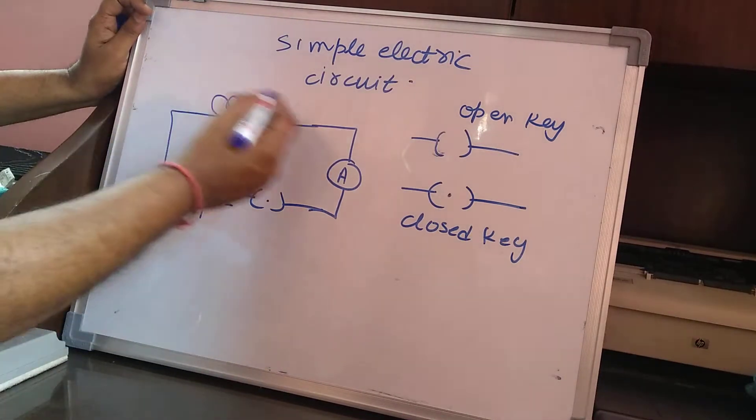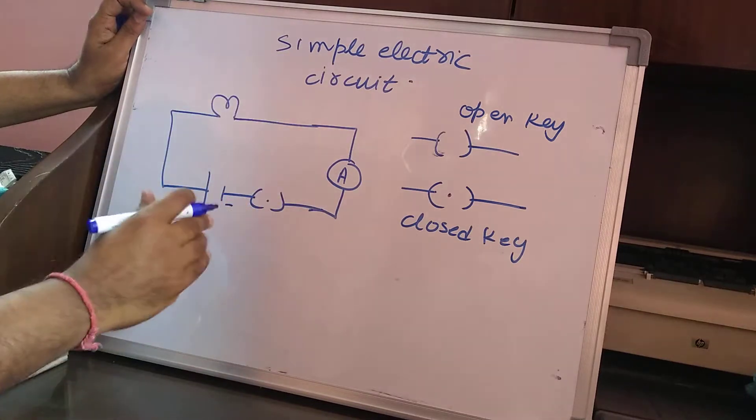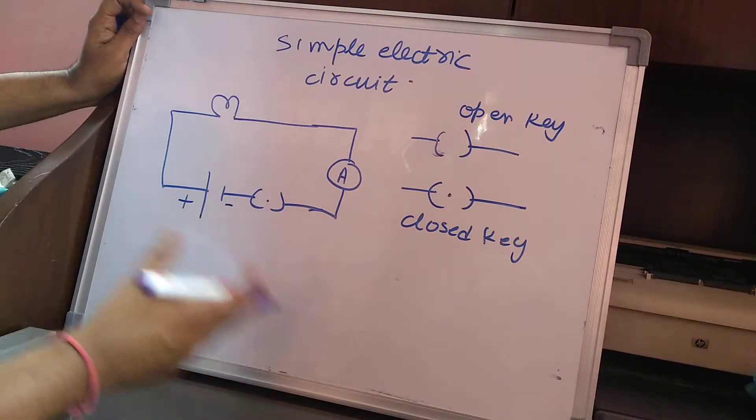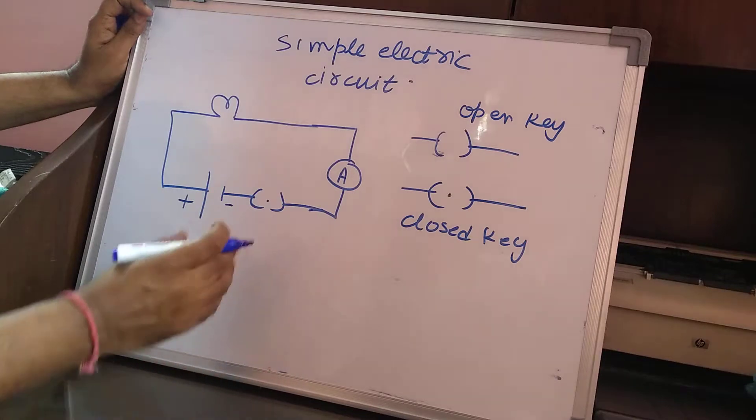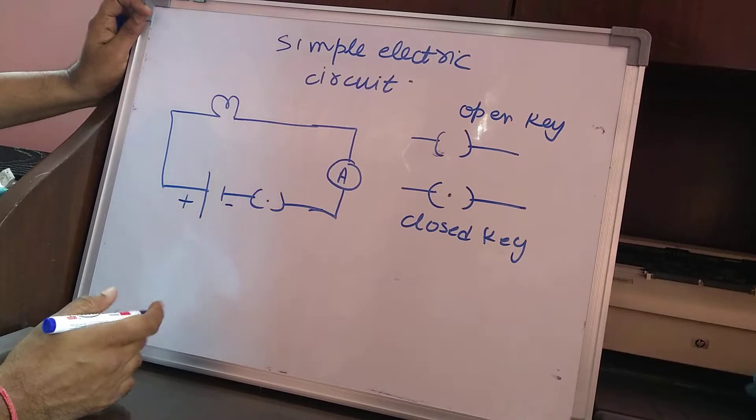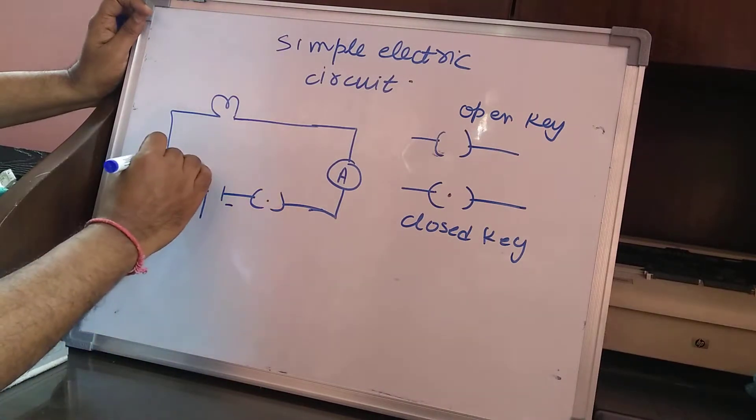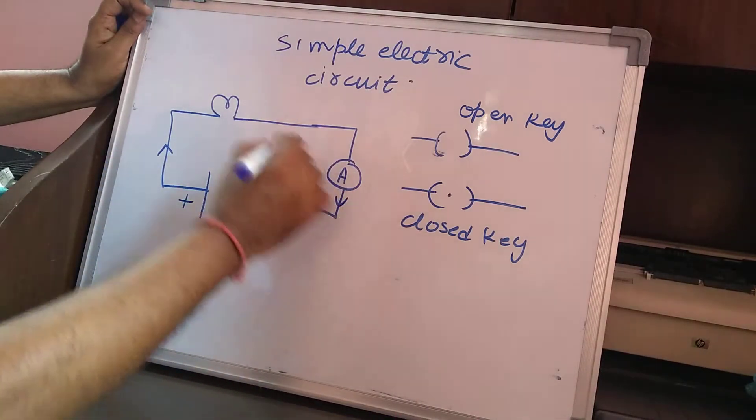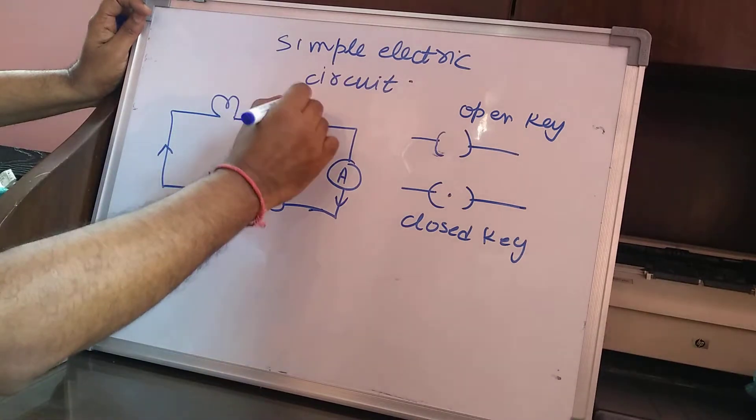The flow of electric current in a wire is like a flow of pipe. If the pipe is broken at any point, the water cannot flow. Similarly, if the path is broken at one particular point, the current will not be able to flow. The direction of conventional current is from positive to negative terminal of a cell. So this is the direction of current.